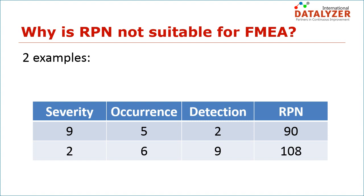However, the first item is a safety item with a high occurrence, which should get a higher priority. In the TS16949 requirements, it was stated that RPN numbers should not be the leading factor for action. In 2017, a task group worked on harmonizing the FMEA methods of AIAG and VDA, resulting in a harmonized FMEA method where RPN is replaced by action priority.